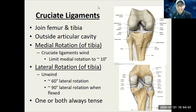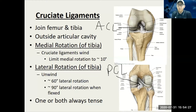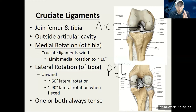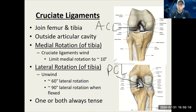Let's get to the cruciate ligaments. Cruciate means inside, deep within the knee itself. We've got the ACL — anterior cruciate ligament — and the PCL — posterior cruciate ligament. They're named after where they attach onto the tibia. If it has an anterior attachment on the tibia, that's the ACL. The PCL is just the opposite, with a posterior attachment. The PCL is thicker and stronger than the ACL, and the ACL gets torn much more often.